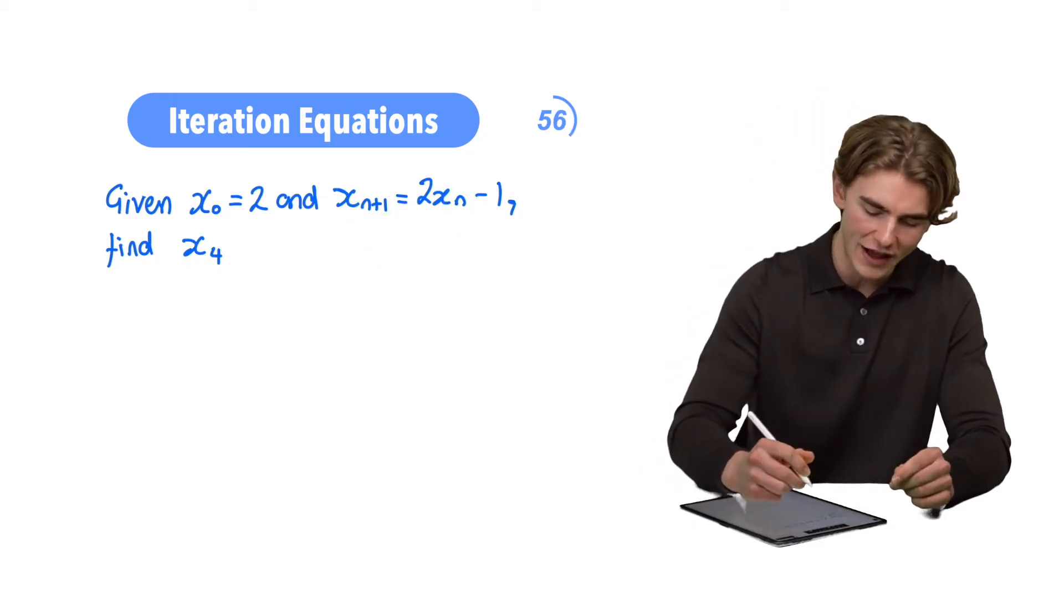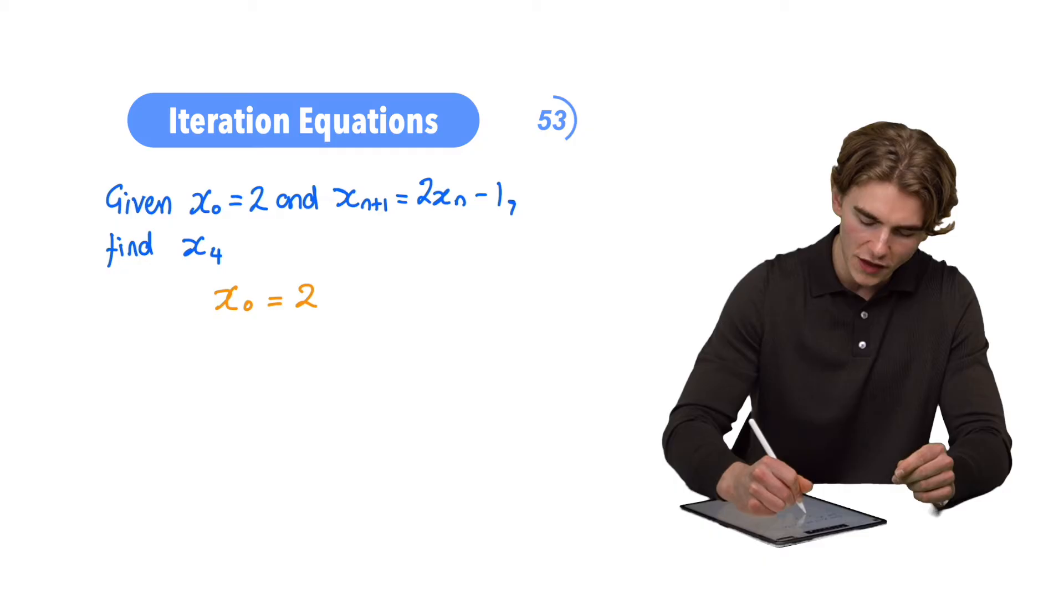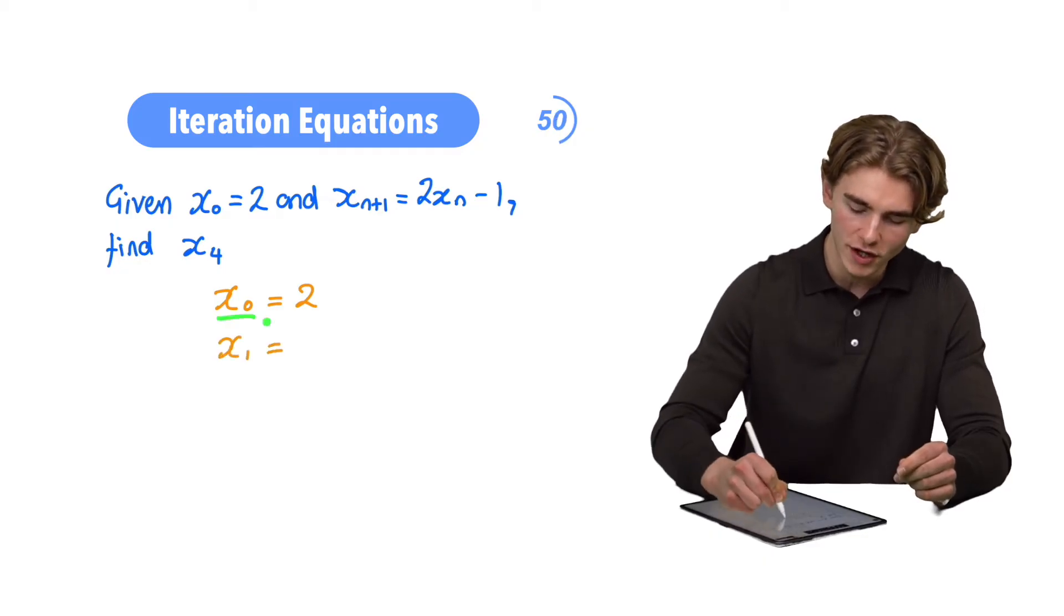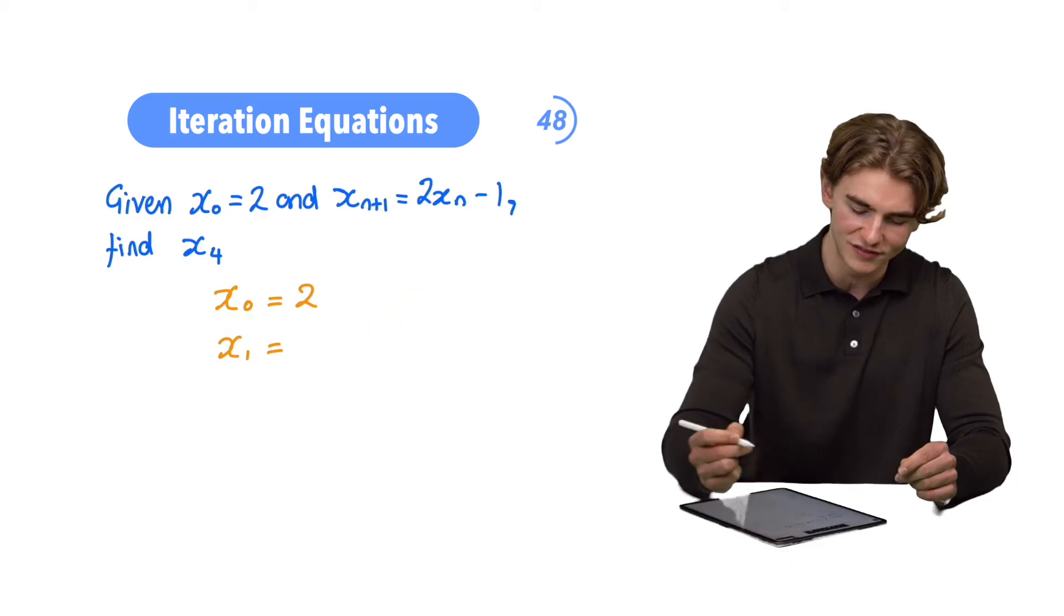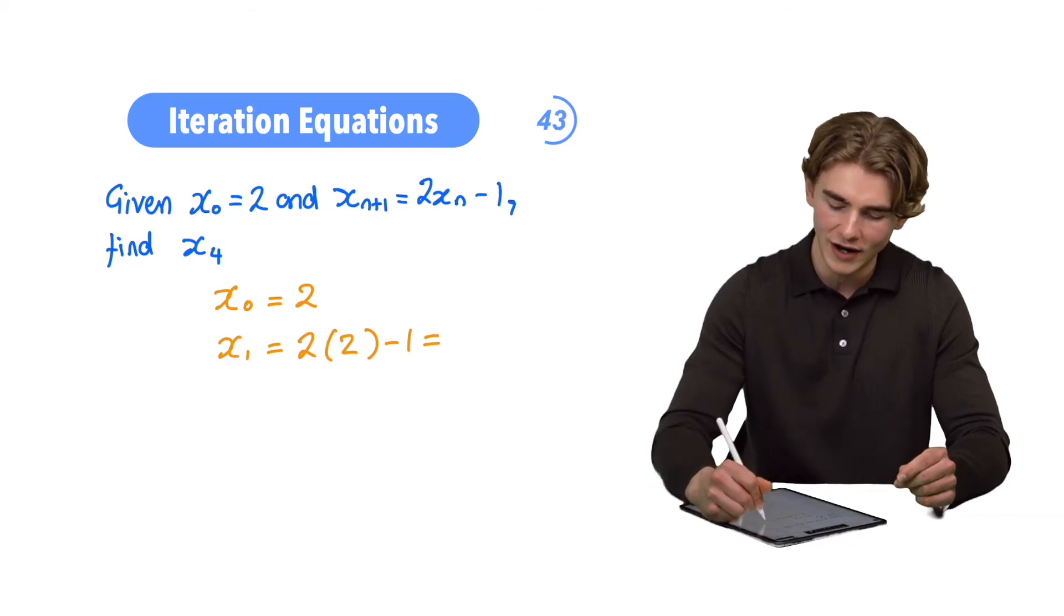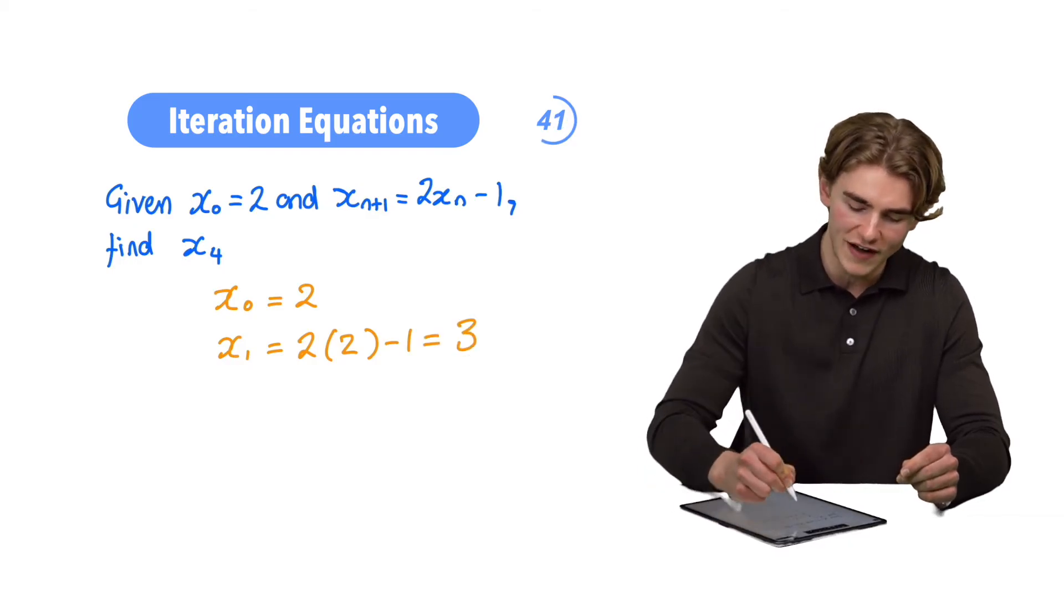First of all, let's write out our x0 equals 2. Then, to find x1, what we're going to do is plug in x0 to our equation. x0 is 2, so 2 times by x0 gives us 2 times by 2 minus 1, which is 4 minus 1, that's 3. So, we found the value of x1.